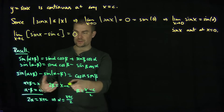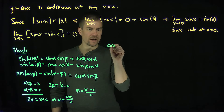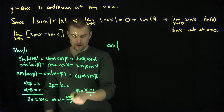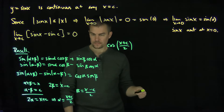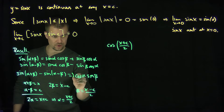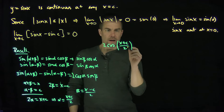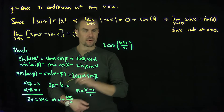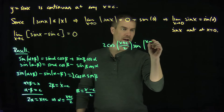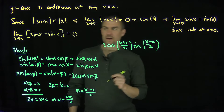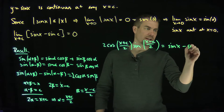Using these trigonometric identities, I can conclude the following: 2 times cosine of alpha — which is x plus c over 2 — times sine of beta — which is x minus c over 2 — is equal to sine of x minus sine of c.